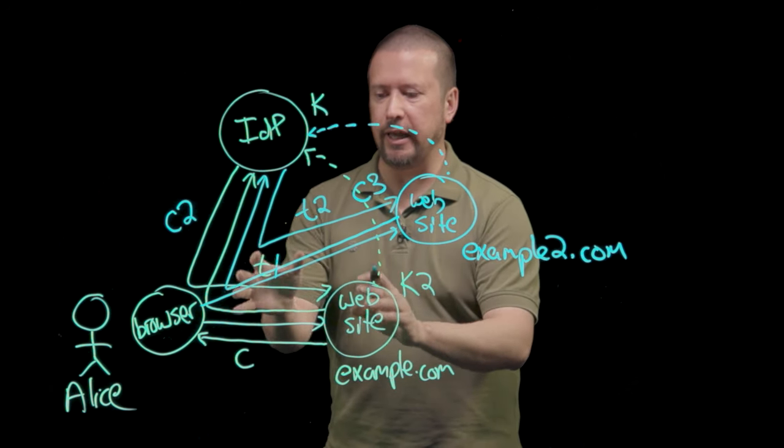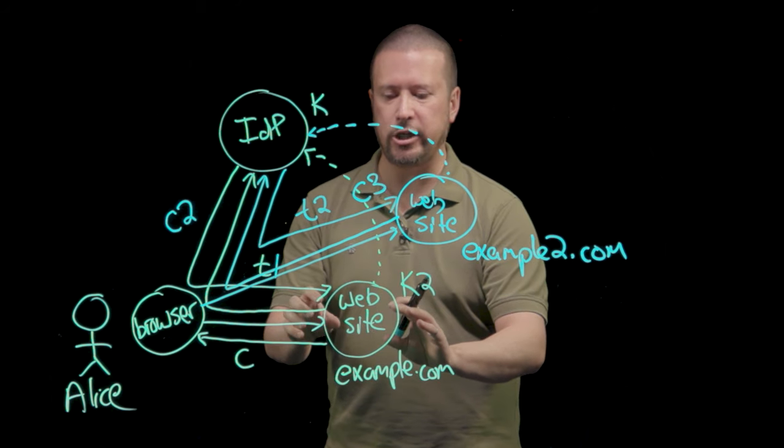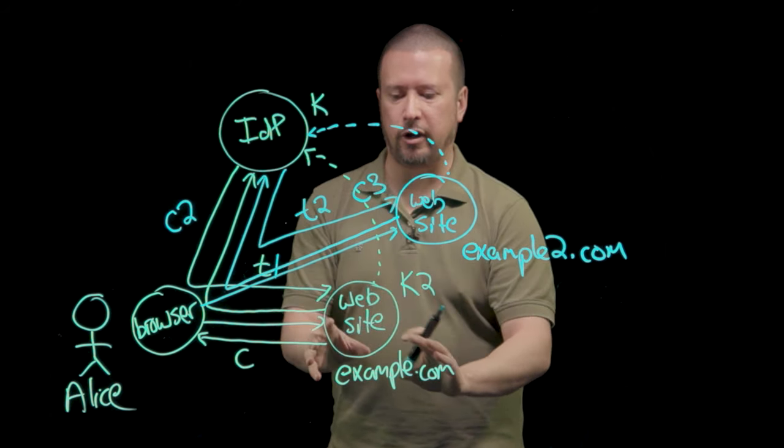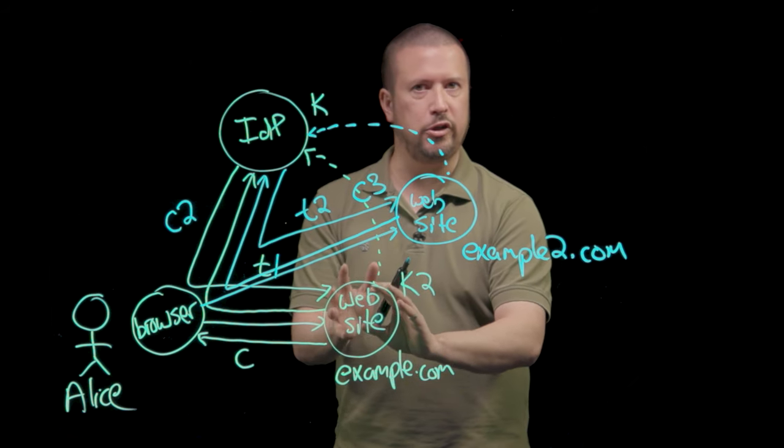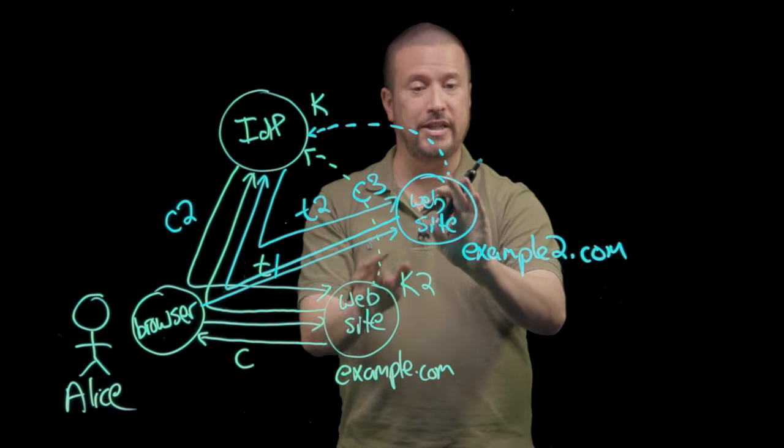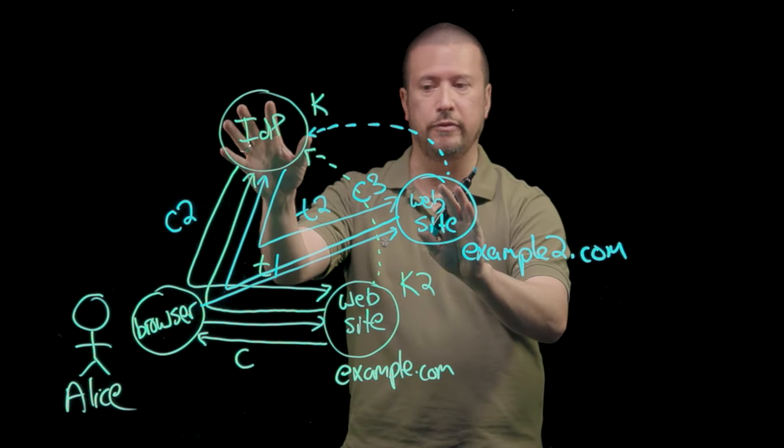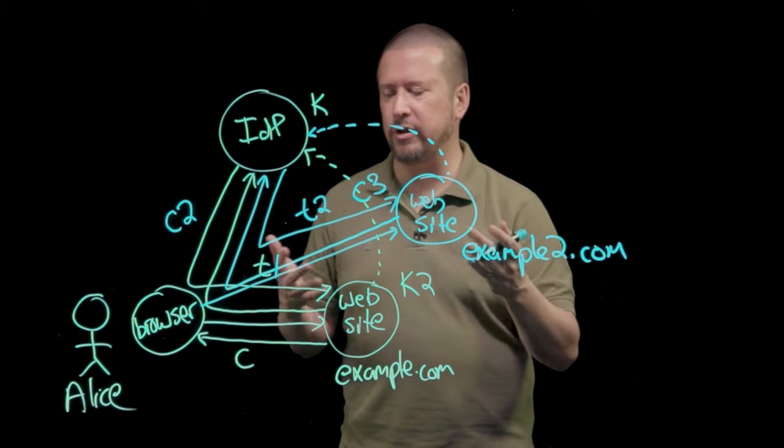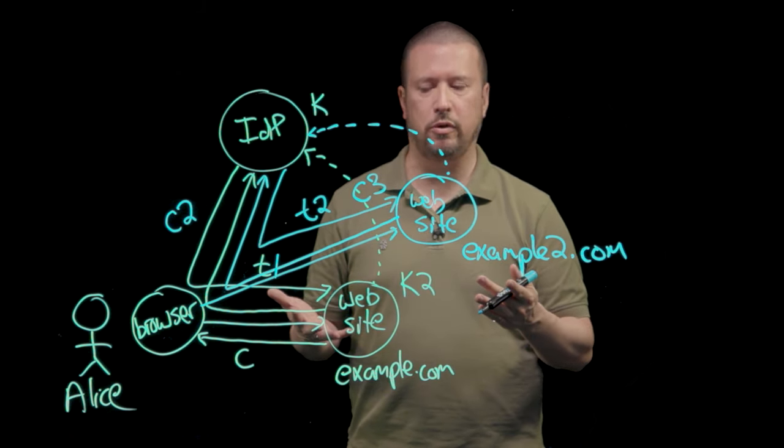The tokens and the claims that are in the tokens are a matter of the relationship between the website and the IDP. If example.com needs one set of claims to do its job, then the IDP will send that set of claims. If example2.com needs a different set of claims, then it will send a different set of claims to example2.com. So there doesn't have to be any relationship between these tokens.